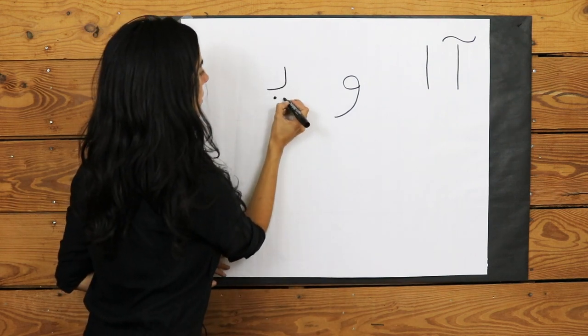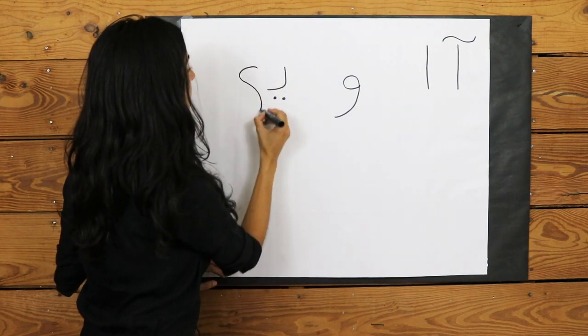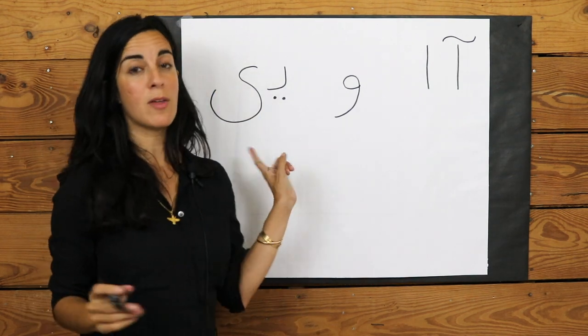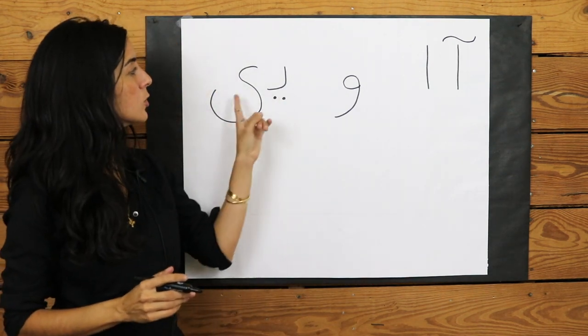And finally, the letter E. And that is the last letter of the alphabet. And that has two different versions.